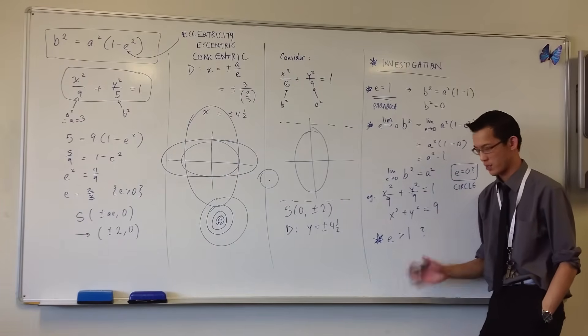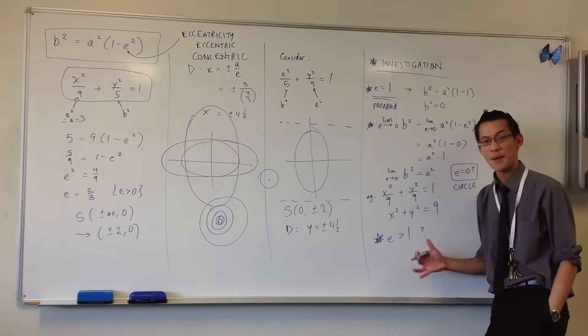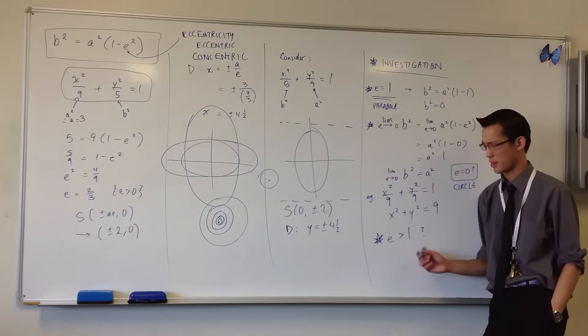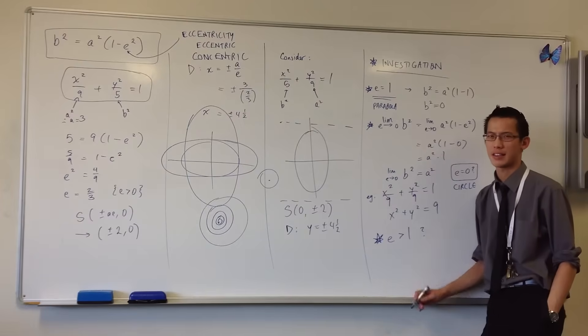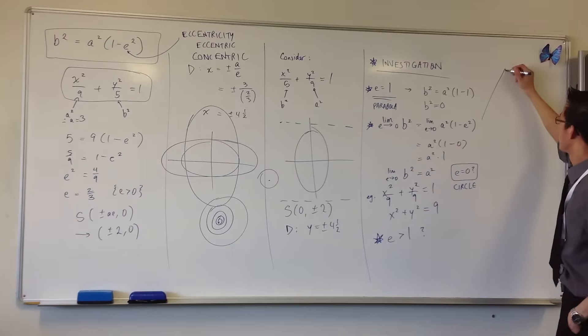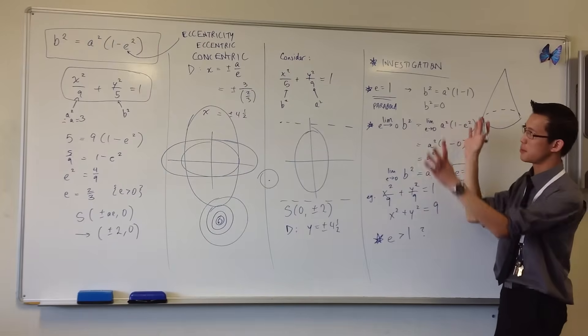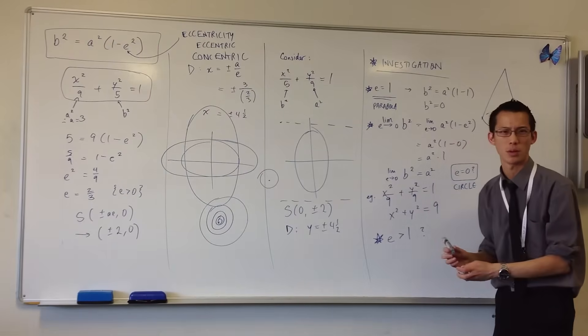Which then begs the question, well, what happens when the eccentricity goes further? Well, that's what we're going to have a look at next time, the kind of shape that we get. Some of you may already know what the shape that emerges out of this is, but the real question is why is it that shape? And what does it have to do with the whole name of this topic, which is conic sections? What relationship do all of these pieces have together? That's what we're going to explore next time.